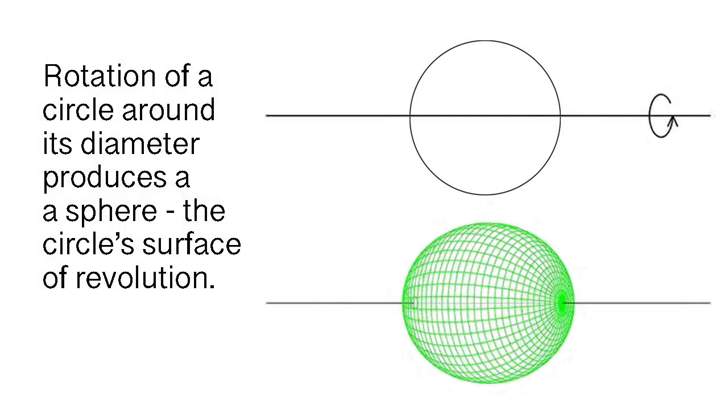The surface of revolution of a circle, the shape you get if you rotate a circle about its diameter, is a sphere. And that's the shape about which you'll have more to say in a future video.